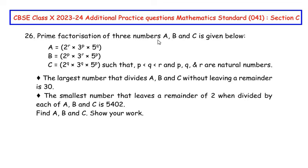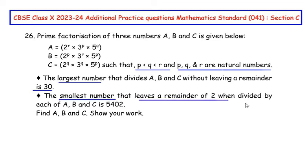The prime factorization of three numbers a, b and c is given, such that p is less than q is less than r, and p, q and r are natural numbers. The largest number that divides a, b and c without leaving a remainder is 30, and the smallest number that leaves a remainder of 2 when divided by each of a, b and c is 5402. Find the values of a, b and c and show your work.